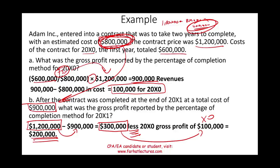To reinforce this material, visit Farhat Lectures for additional resources including multiple choice questions, true/false questions, and exercises. For a deeper understanding of percentage of completion versus the completed contract method from a financial accounting perspective, check out the intermediate accounting subscription. Good luck, study hard, invest in yourself and your career — accounting, the CPA, and the enrolled agent exam are all worth it.